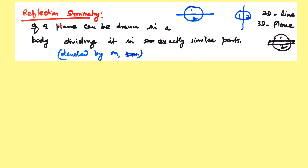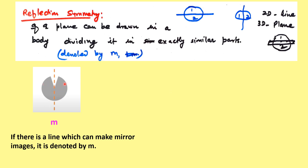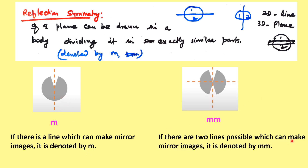Another kind of symmetry is reflection symmetry. In 3D, a plane divides the object into exactly similar parts — its mirror image. In 2D, a line serves the same purpose. This symmetry is denoted by m. If a single line creates a mirror image, it is denoted by m. If two lines are possible, it is written as mm.